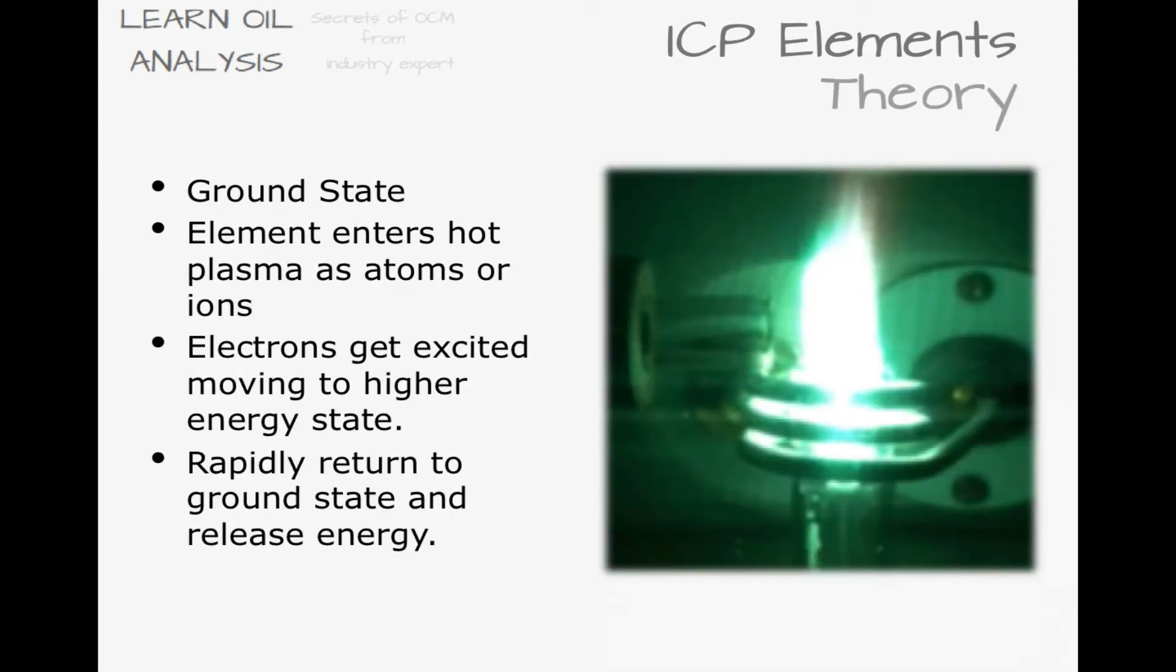The theory of ICP is that an element in its ground state enters the hot plasma where its electrons get excited and move to a higher energy state. This higher energy state is not stable and the energy is quickly released as a wavelength of light, specific to each element. The higher the intensity of each element specific wavelength, the higher the concentration of the elements in that sample.